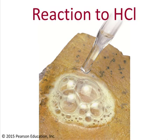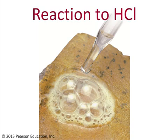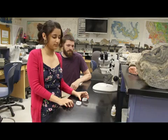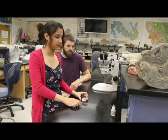Another property that's very distinctive and will cue you in instantly as to which mineral you're dealing with is the reaction to acid. You will have in lab some dilute hydrochloric acid, and if you put a drop of that on the mineral calcite, it will immediately start fizzing in a fairly vigorous fashion. So bubbles will be produced and it will be giving off carbon dioxide gas.